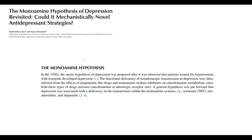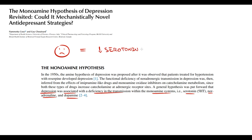Up to this day, we treat depression according to monoamine theory. We believe that depression is caused by deficiency of neurotransmission, which can be caused by low levels of serotonin and norepinephrine, and to a lesser extent dopamine, in the synapse. So we believe that depression is caused by decreasing amount of serotonin and norepinephrine in the synapse.